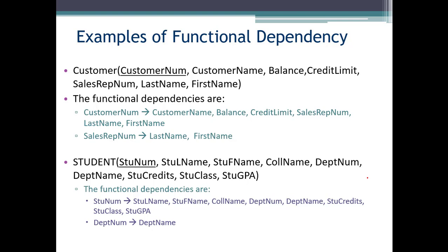Student number is the primary key, so all those other fields are going to be functionally dependent. But I have department num and department name. Department name is functionally dependent on department num, because when I know department num, I know department name.